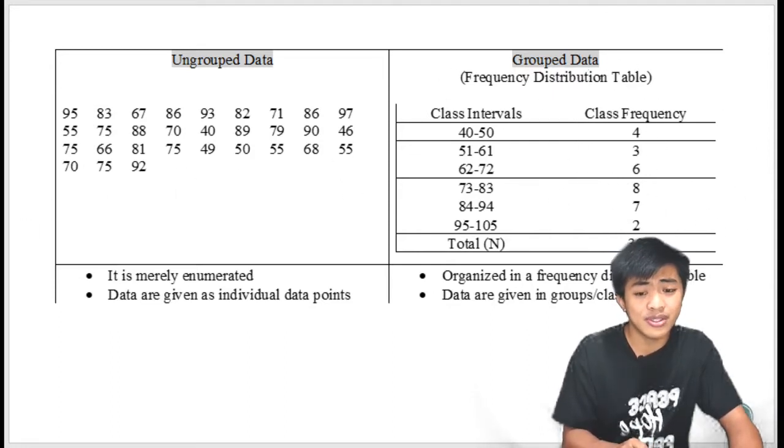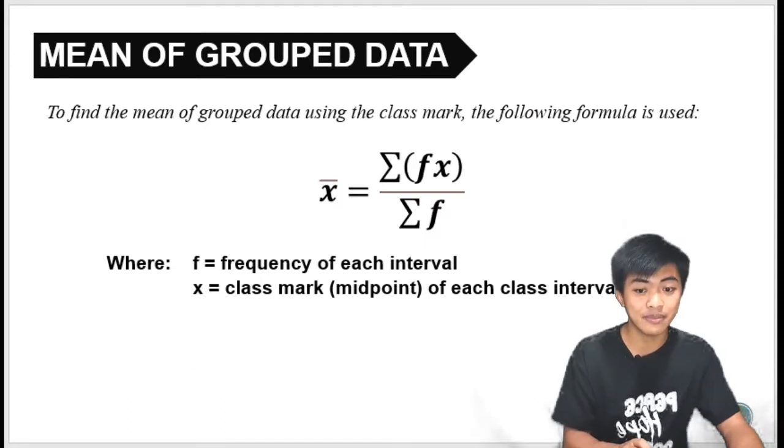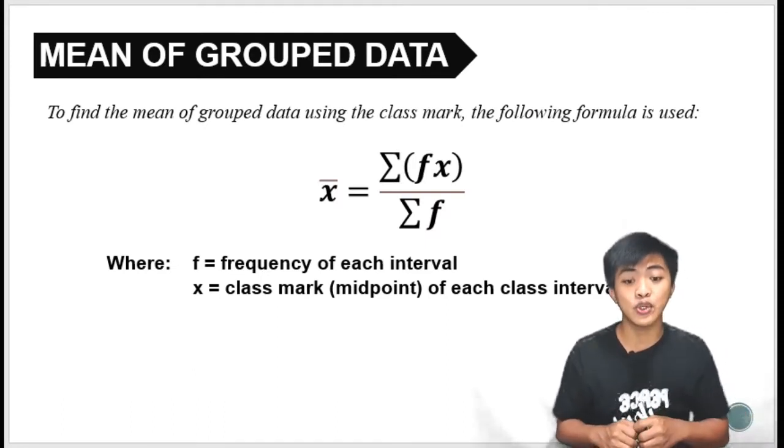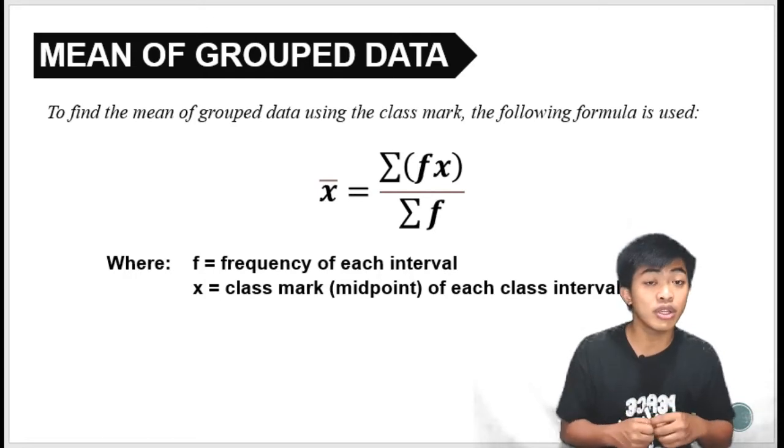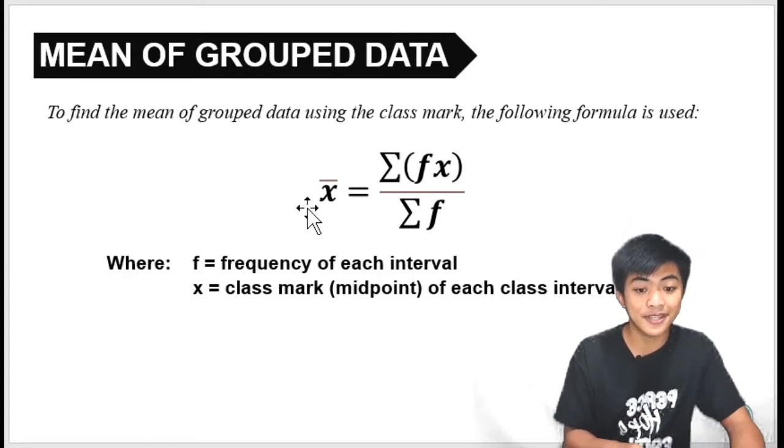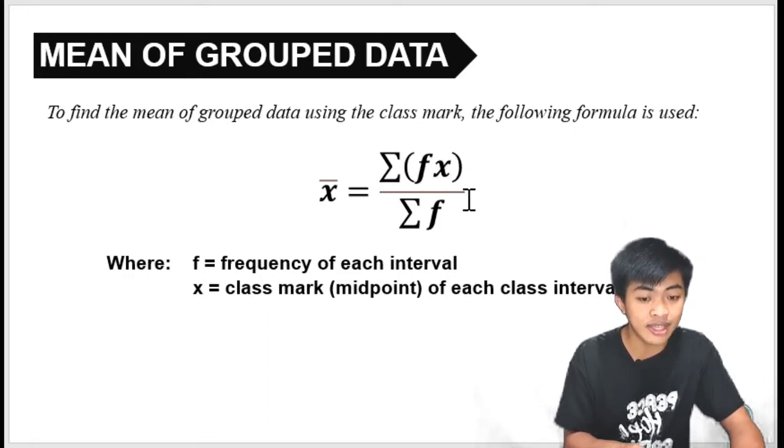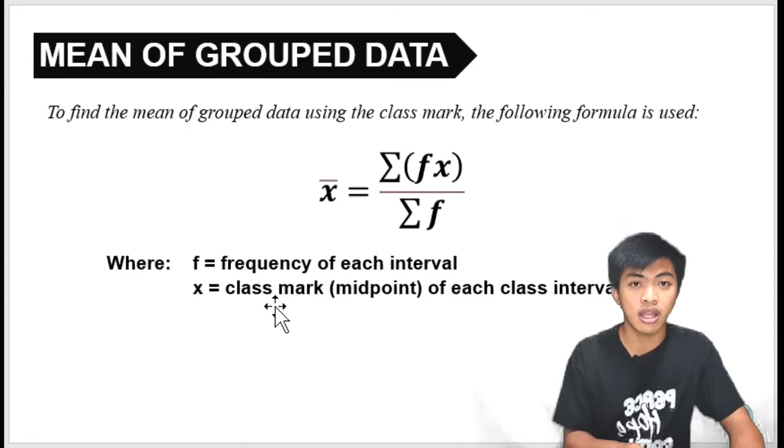Okay, now, so how do we find the mean of grouped data? To find the mean of grouped data using the class mark, the following formula is used. So this is x bar, ibig sabihin nito, mean, that is equal to the summation of fx, divided by the summation of f. And f here is the frequency, x is the class mark.